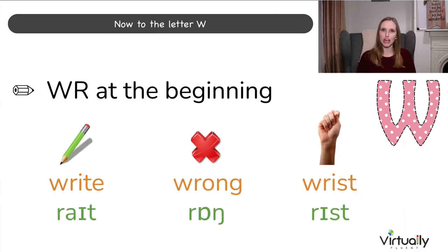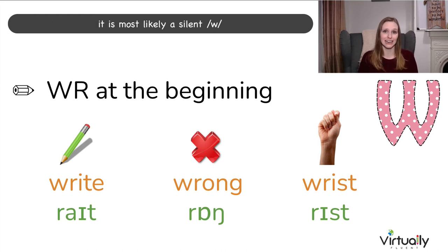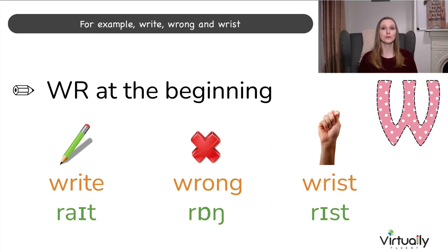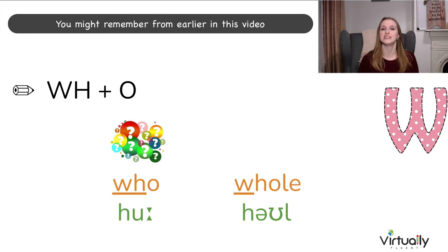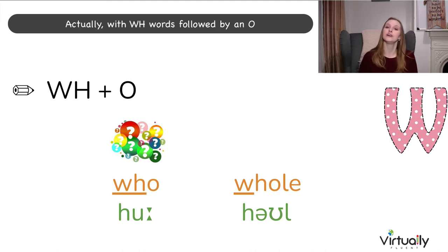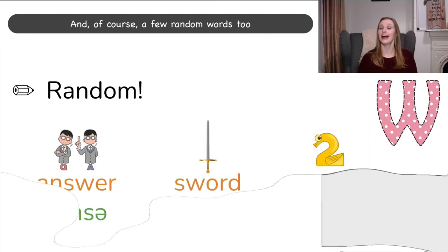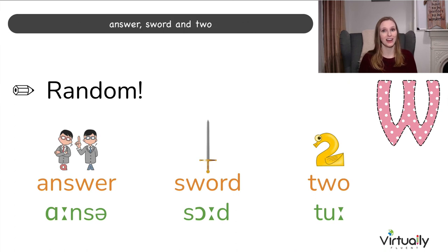Now to the letter W. When we have WR at the beginning of a word, it is most likely a silent W, pronounced as R instead — for example: write, wrong, and wrist. You might remember we looked at WH words earlier when discussing the silent H. With WH words followed by an O, the W is silent and it's the H we can hear instead — for example: who and whole. And of course, a few random words: answer, sword, and two.